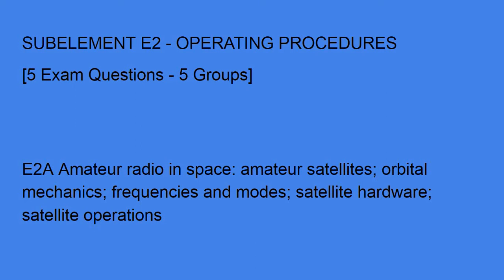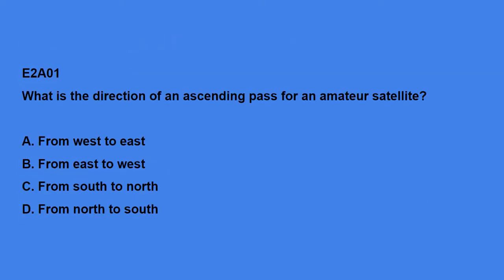Five exam questions come from the five groups here. First off, E2A: Amateur Radio in Space, Amateur Satellites, Orbital Mechanics, Frequencies and Modes, Satellite Hardware, and Satellite Operations. E2A01: What is the direction of an ascending pass for an amateur satellite? The answer is: from south to north.